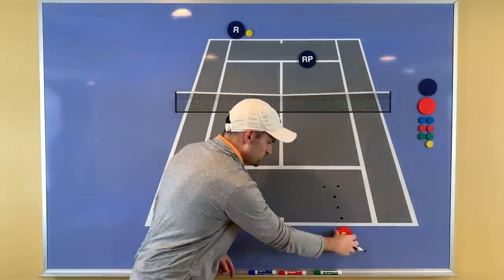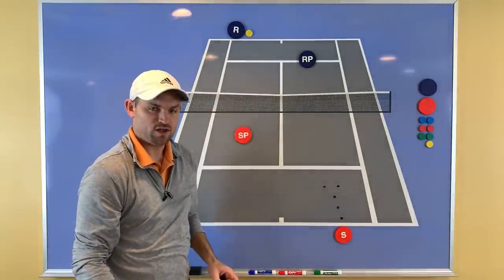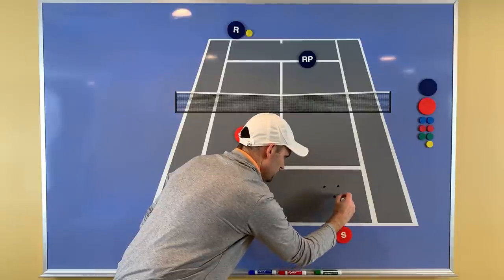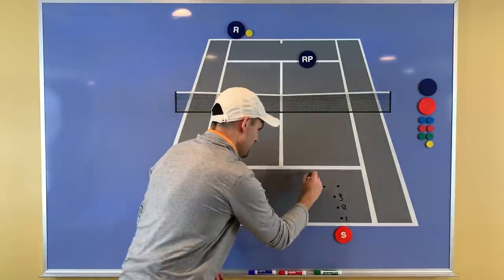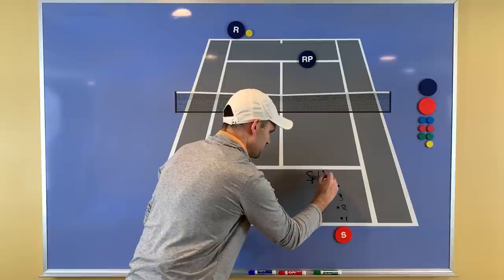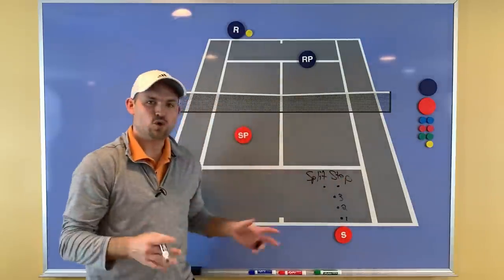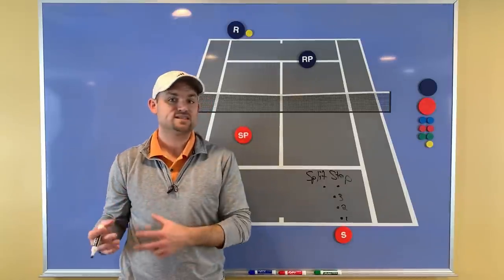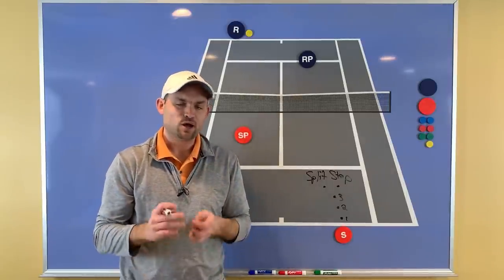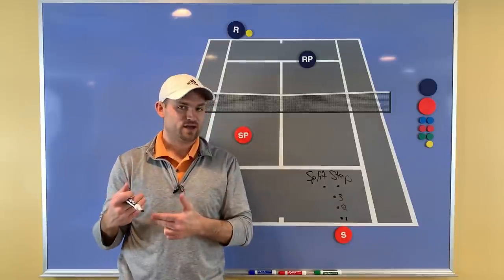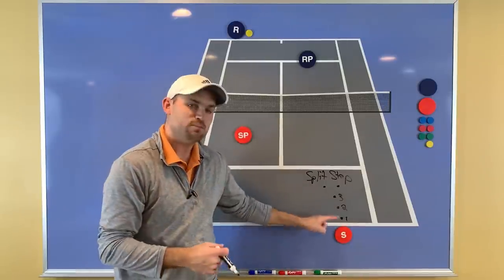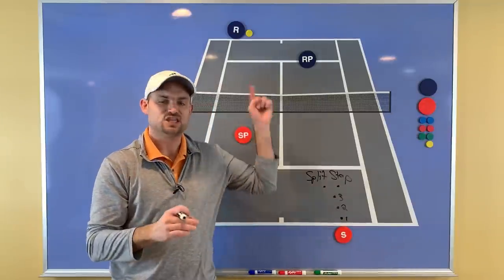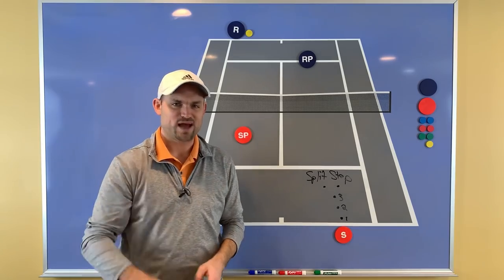So you have to make sure that you split step as your opponent hits the ball. So you're going to serve and you're going to take one, two, three steps, and then you're going to split step. Let me show you right now a college point between USC versus UCLA. And I want you to watch the USC player who's going to be serving. They're going to serve and they're going to come forward. They're going to take three steps and they're going to split step as the opponent strikes the ball.